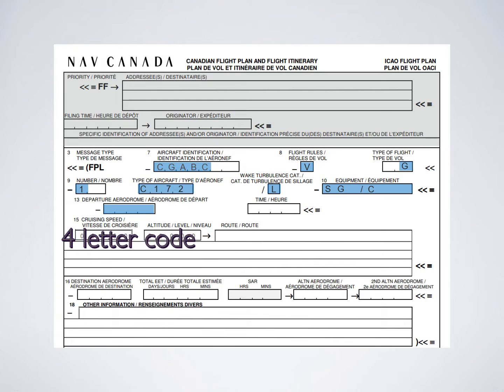If you're flying out of Class Charlie airspace, you probably have a Mode C transponder that is functional, so include a slash C to denote your transponder type. If you have a really fancy airplane you might have a slash S transponder, but you probably just have a Class C, so put /C. For the departure aerodrome, use the four-letter ICAO code - put the C in front, otherwise you might be coding it as a beacon, which is only three letters.